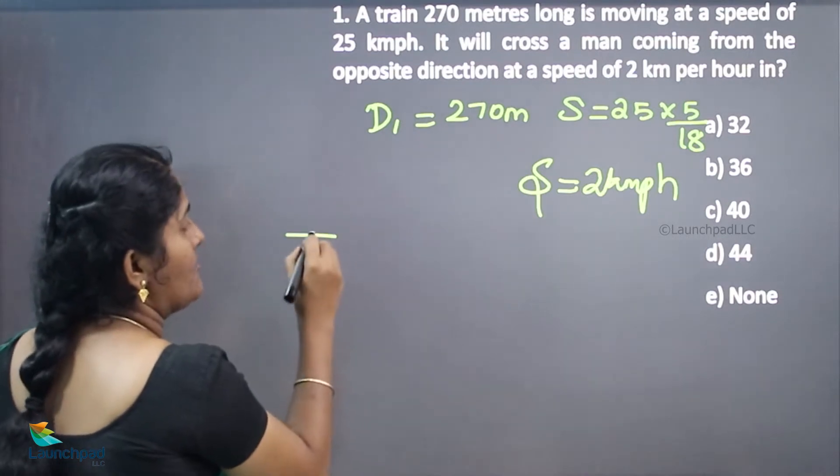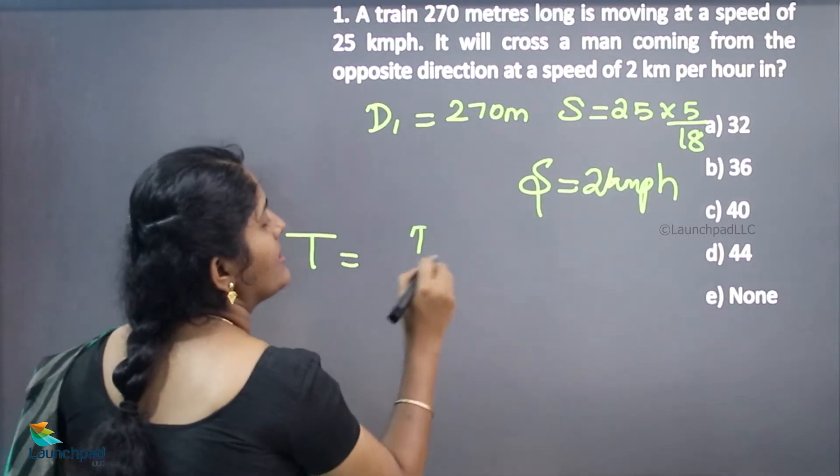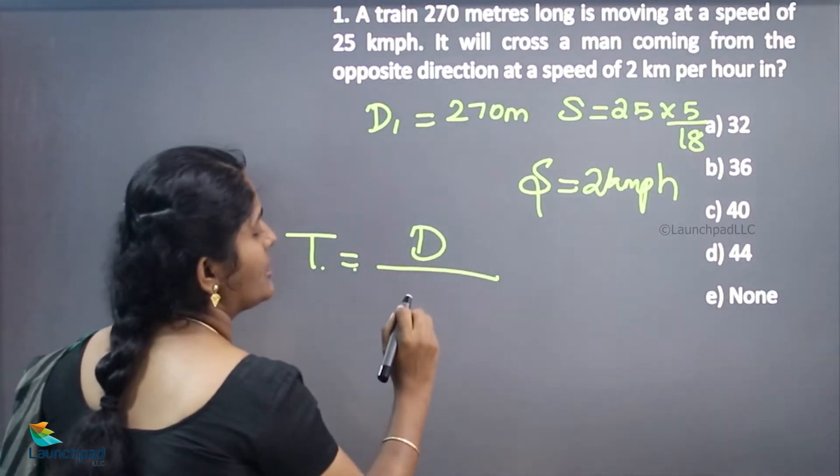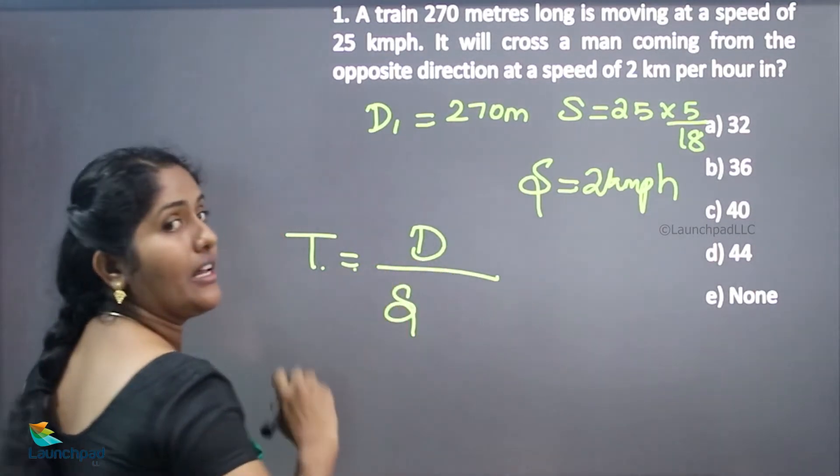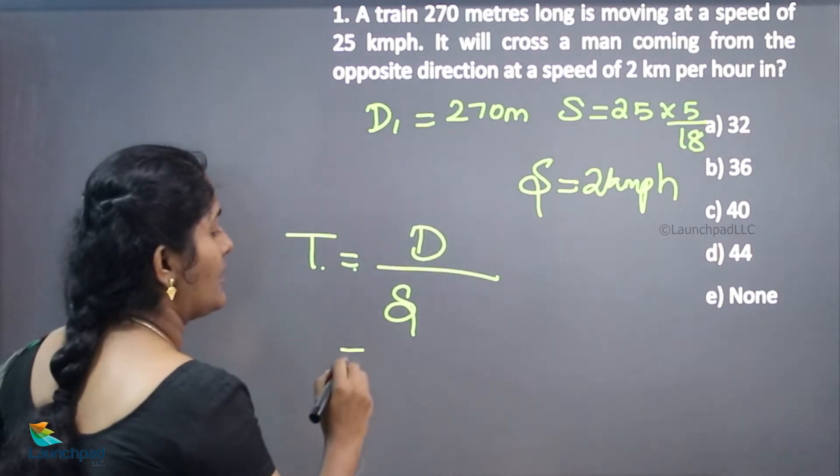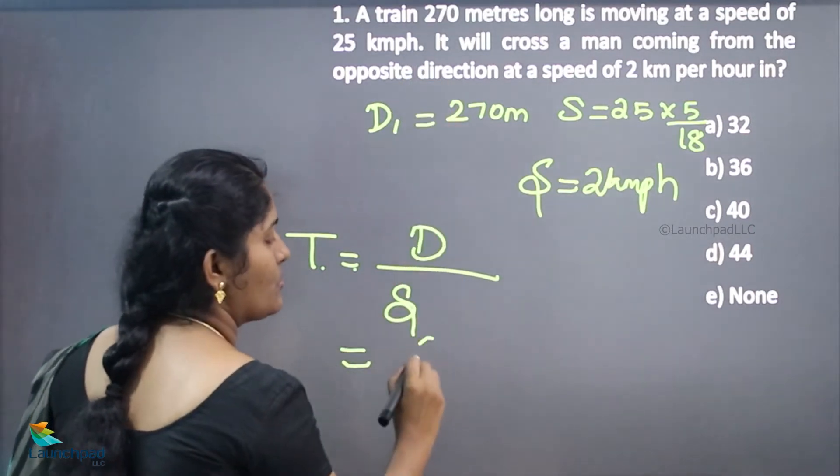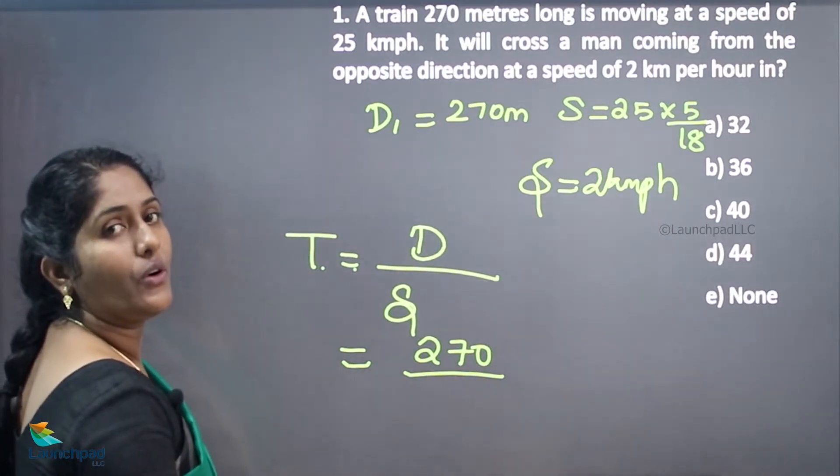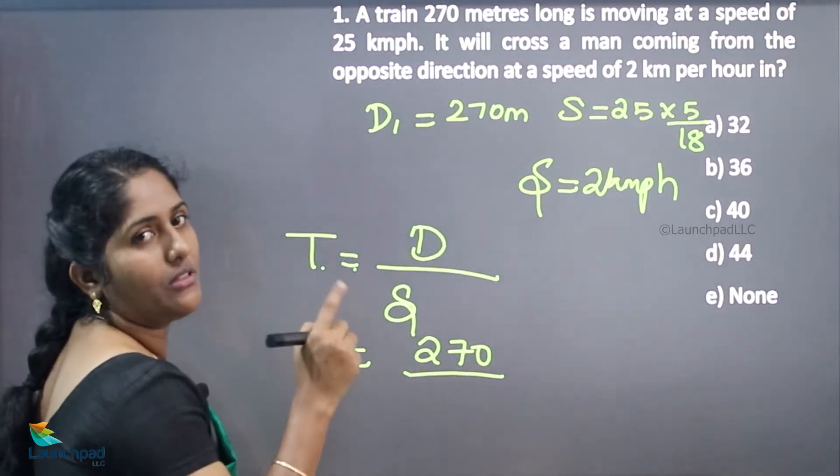We need to find the time taken for the train to cross the man. Time equals distance divided by speed. What is the distance? 270 meters. How do we calculate the speed? We want to consider both speeds.